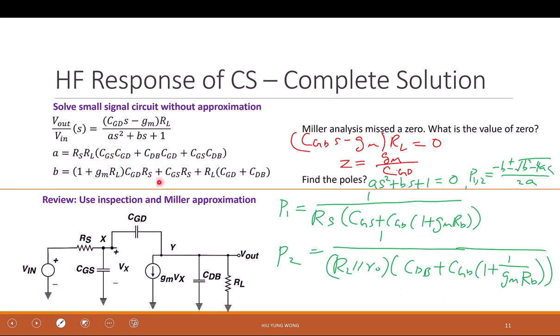Resistor times capacitor with the gain. This one you basically plug in. You cannot get any insight. So that's the first thing. You understand the complete solution. Using this method, we miss the zero. But we have more insight.